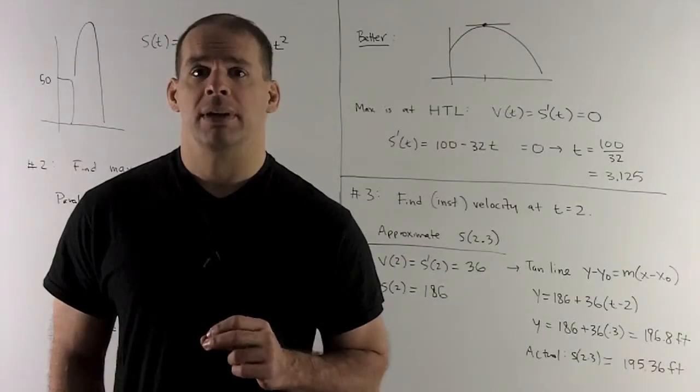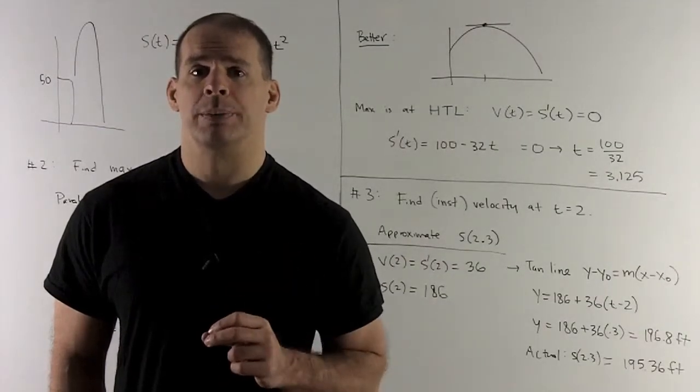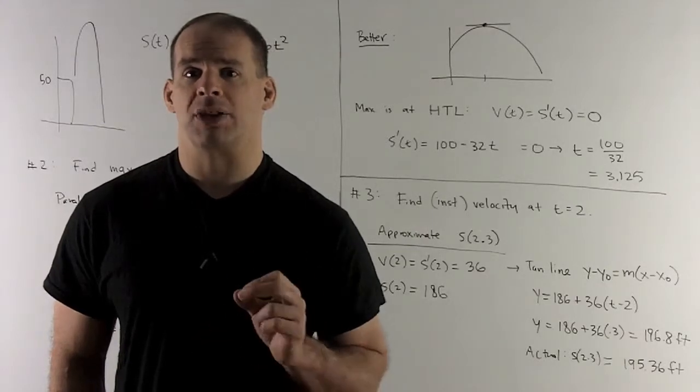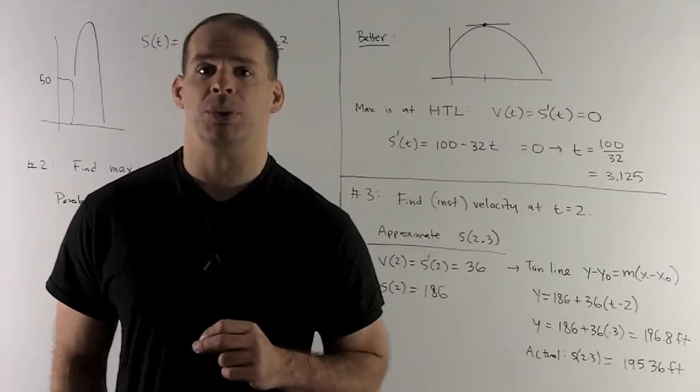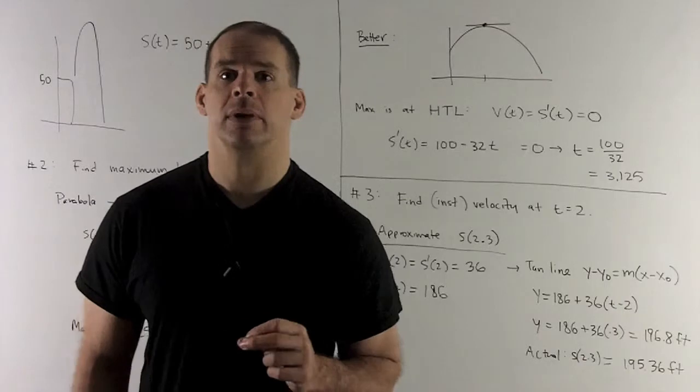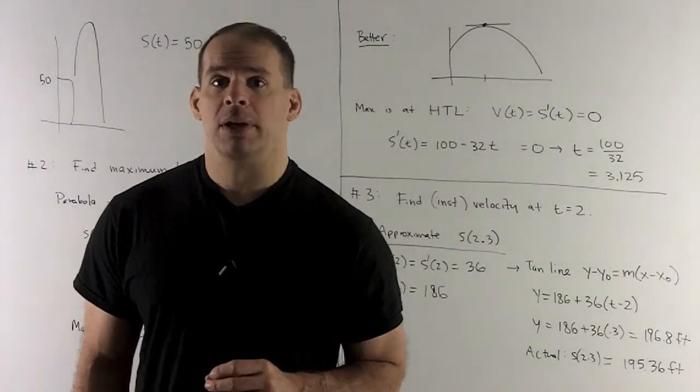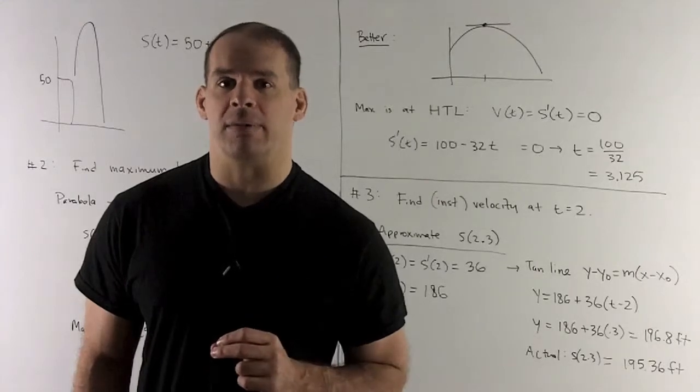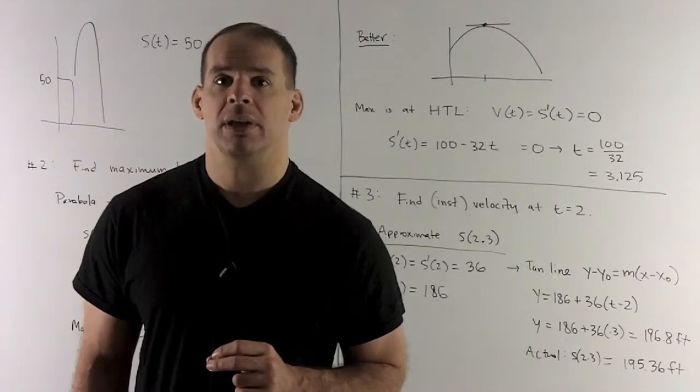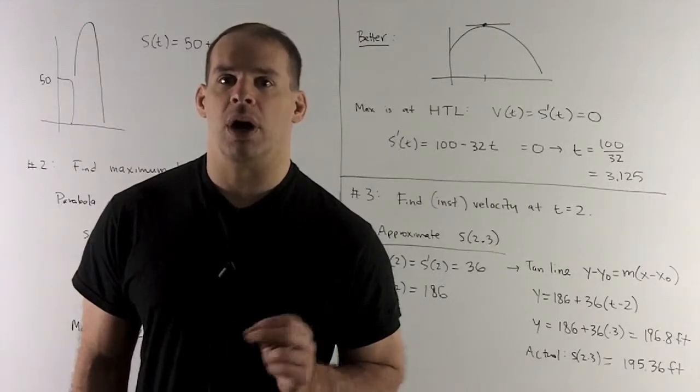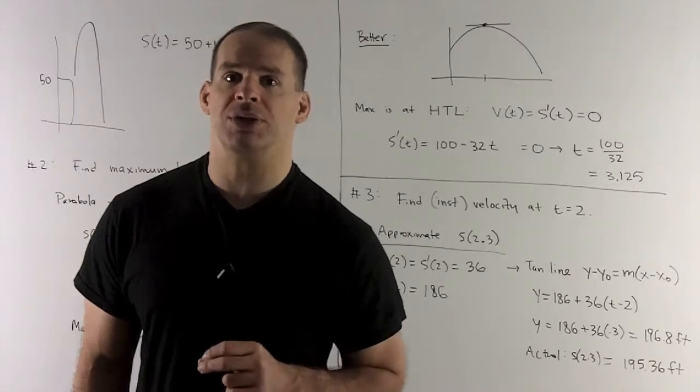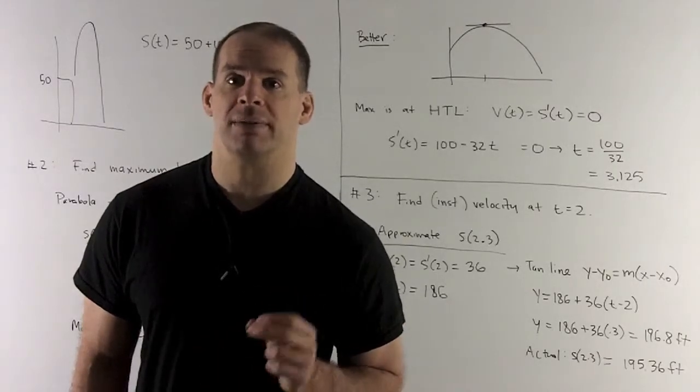Next problem, find the instantaneous velocity at t equal to 2. Once you have that, approximate the position at time equal to 2.3. Okay, we have our velocity function from the previous problem, so all I need to do is stick 2 in there, and that will give me the instantaneous velocity. So v(2) is just going to be equal to 100 minus 32 times 2, which gives me 36 feet per second.